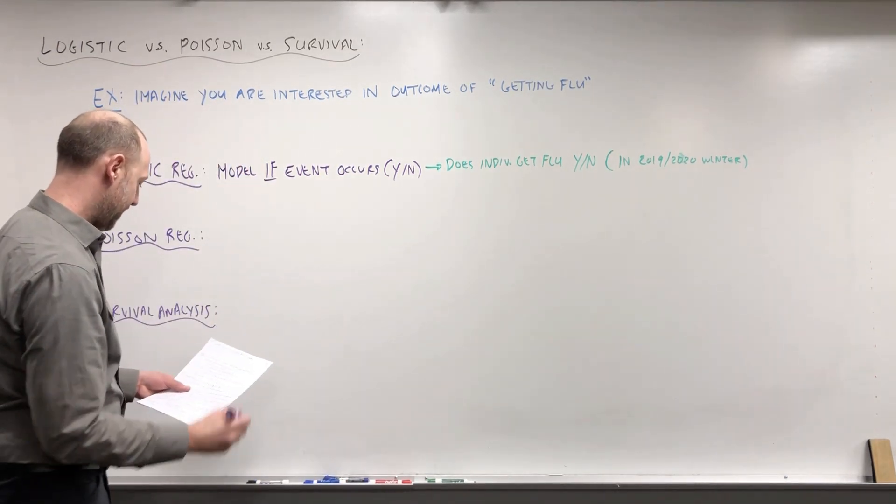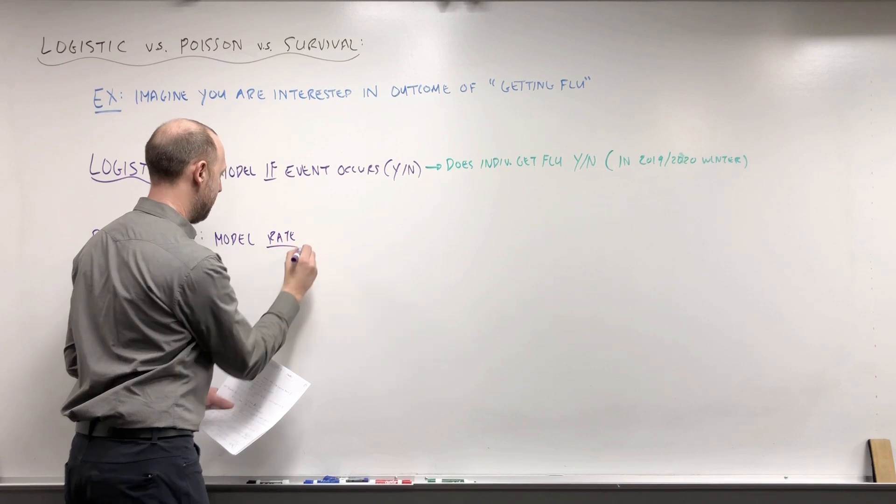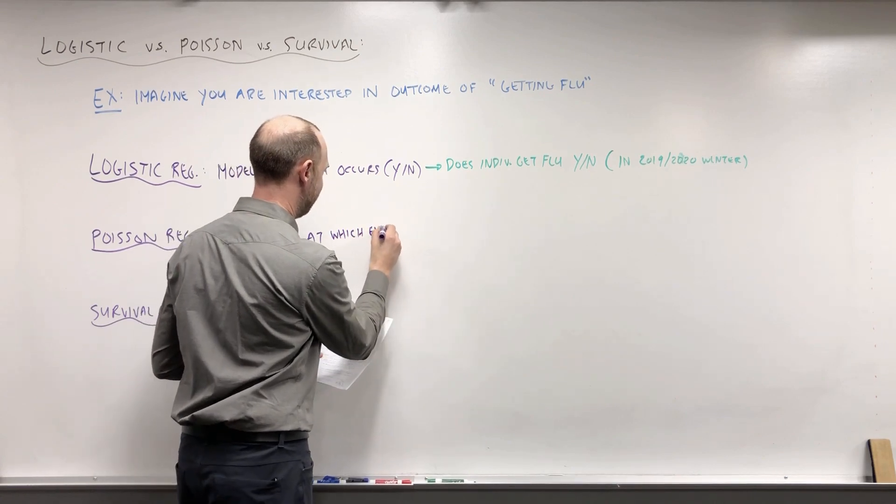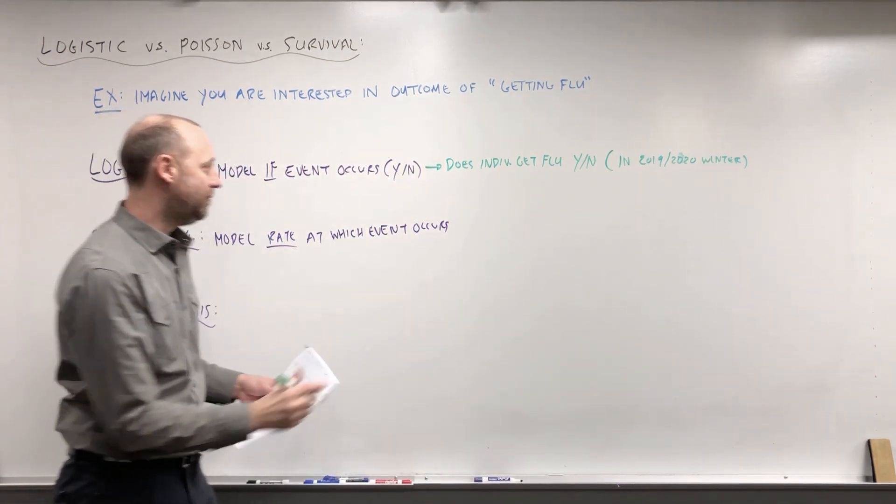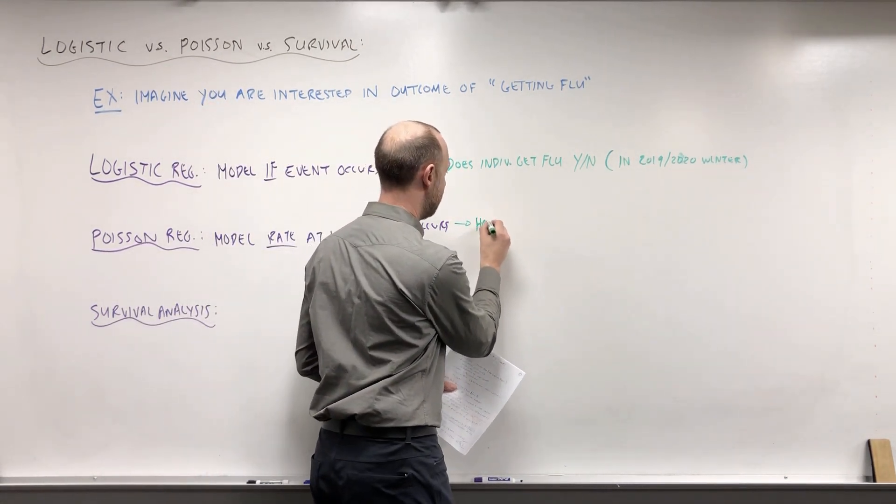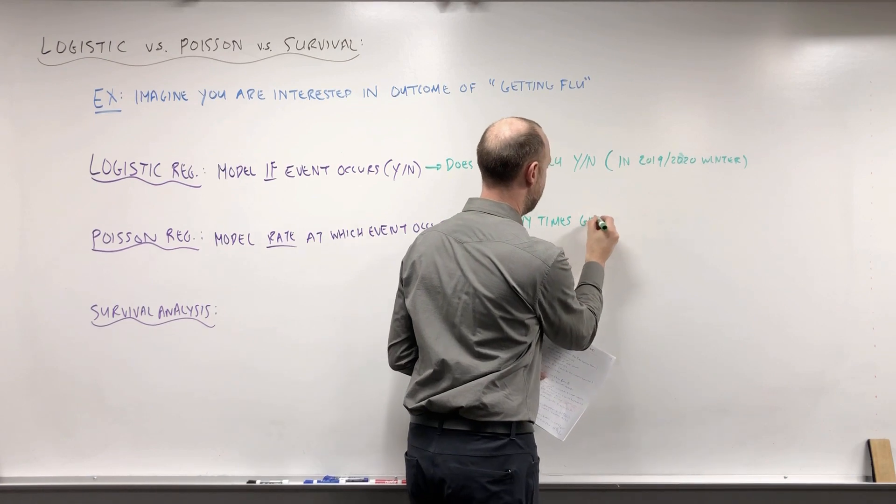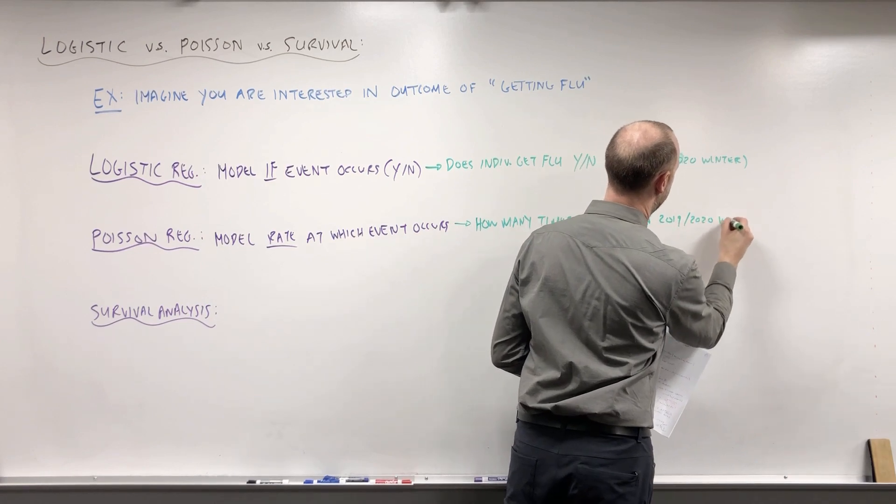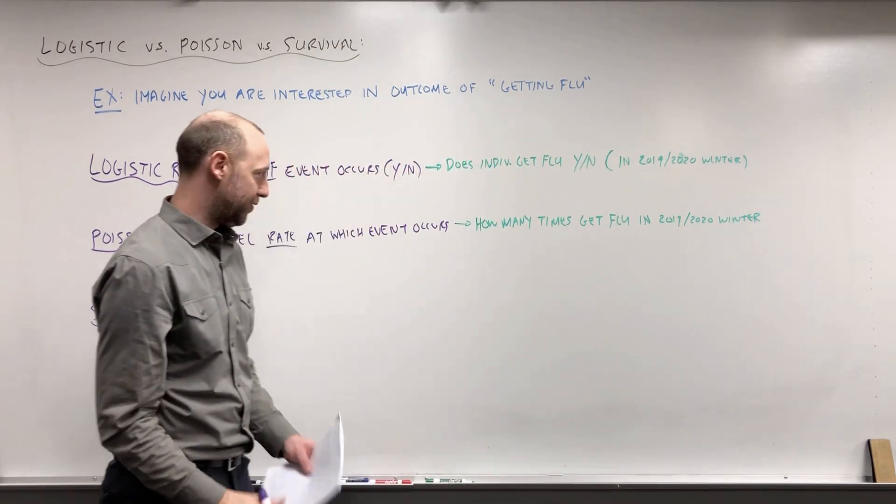Poisson regression. Here we're modeling the rate at which the event occurs. We can model counts or rates. So in the same context, we might try to model something like: how many times does someone get the flu? And again, let's say in the 2019-2020 winter. Some year that's already done, the endpoints are completed, and we can count the number of times someone got the flu over this season.